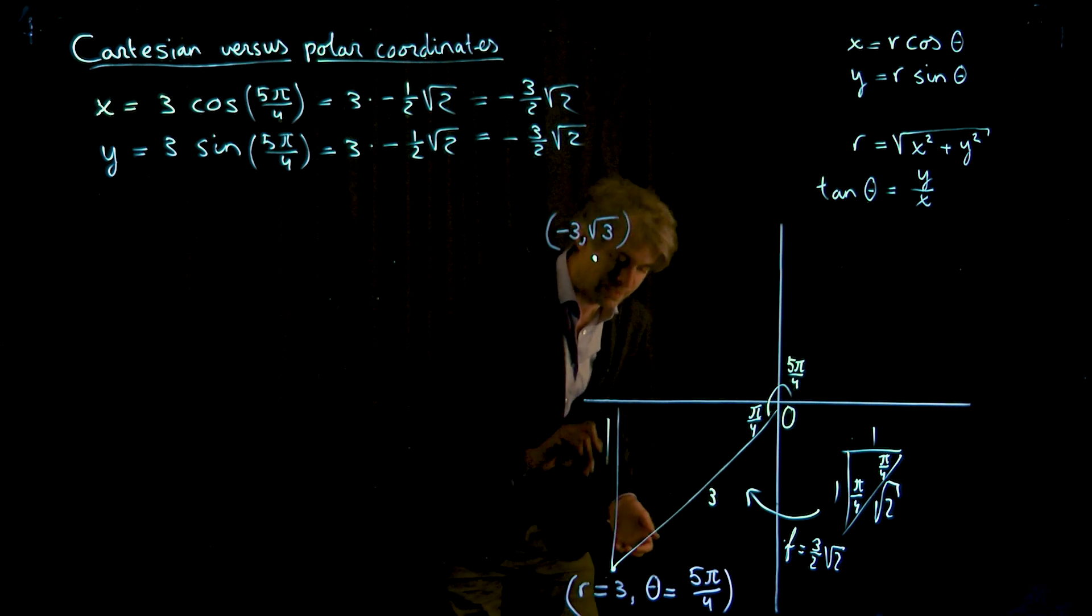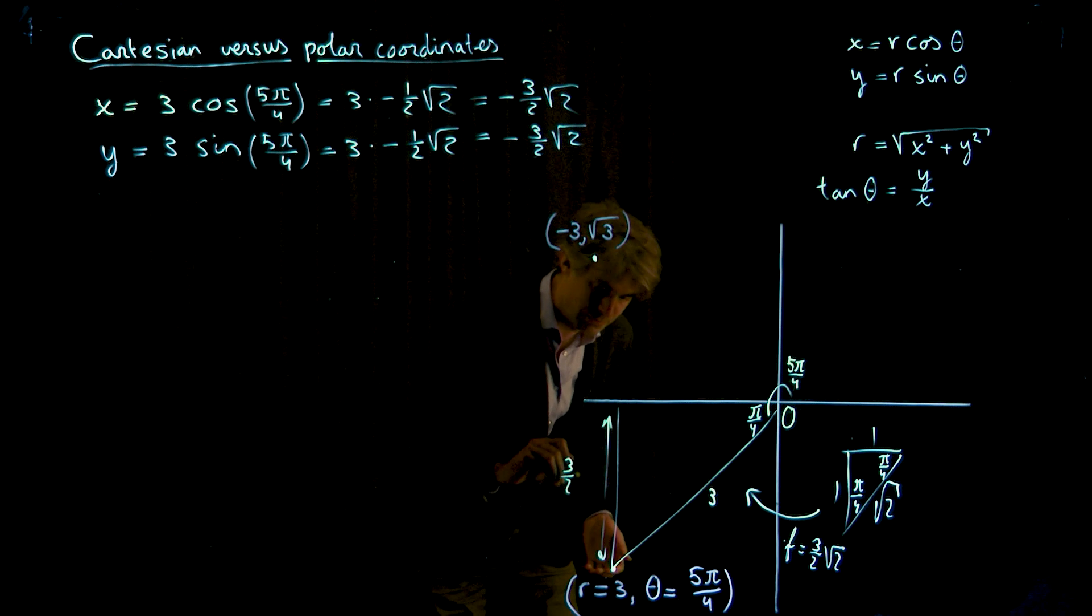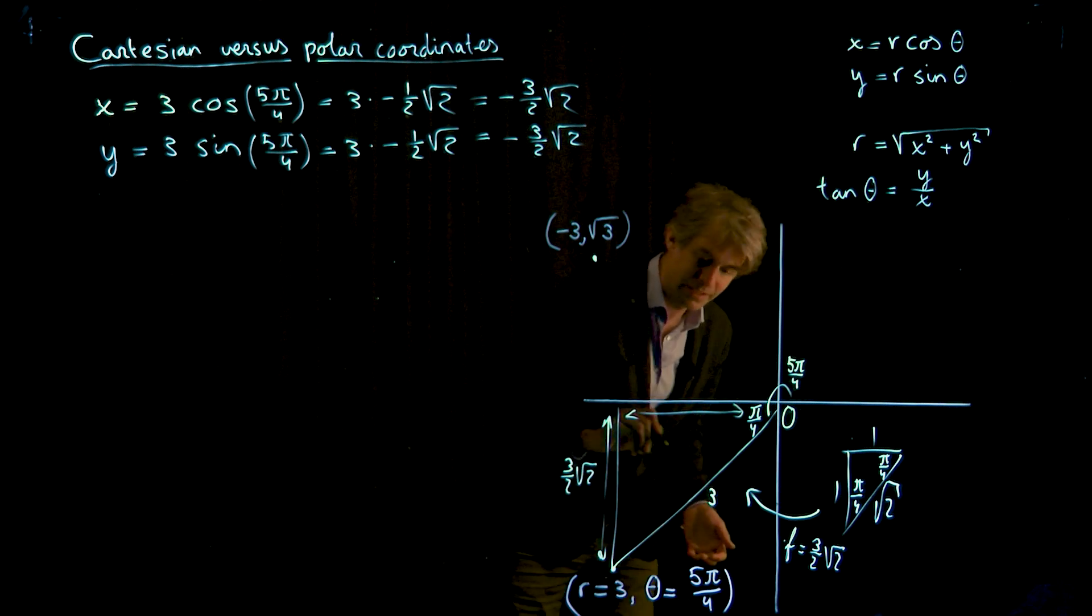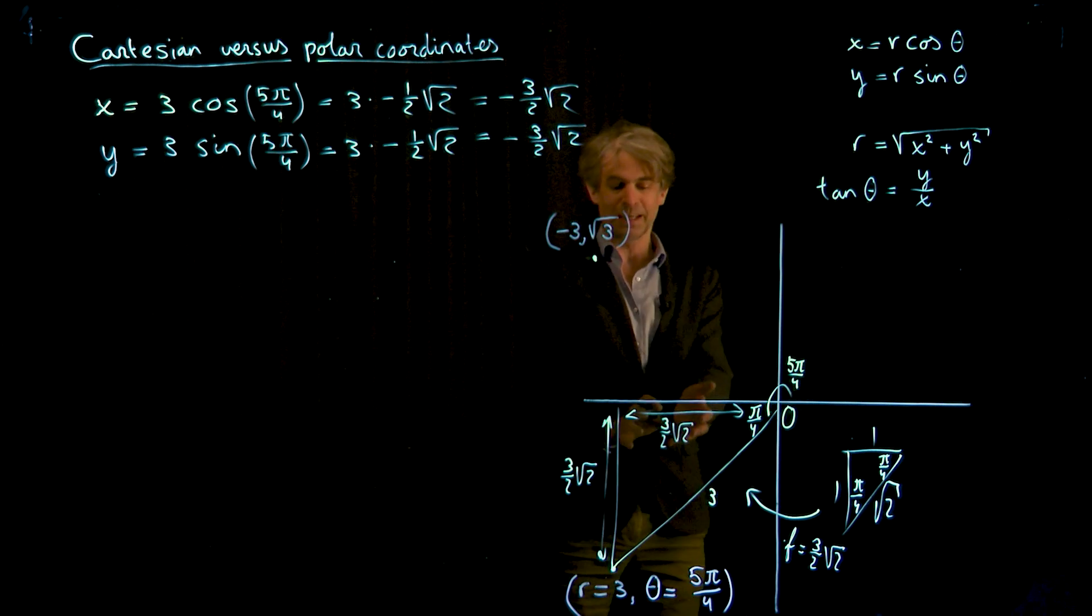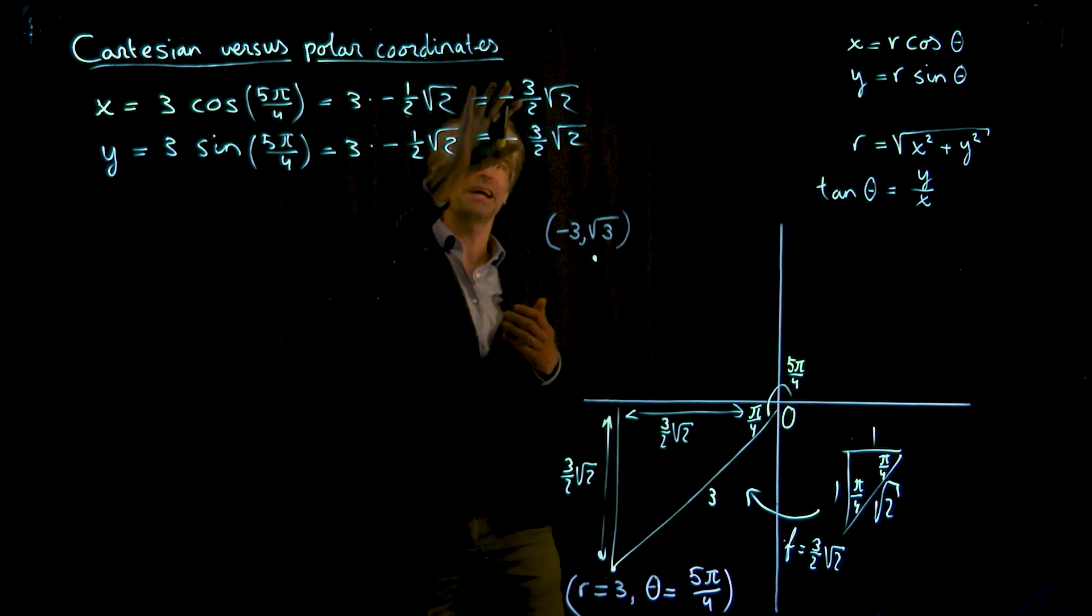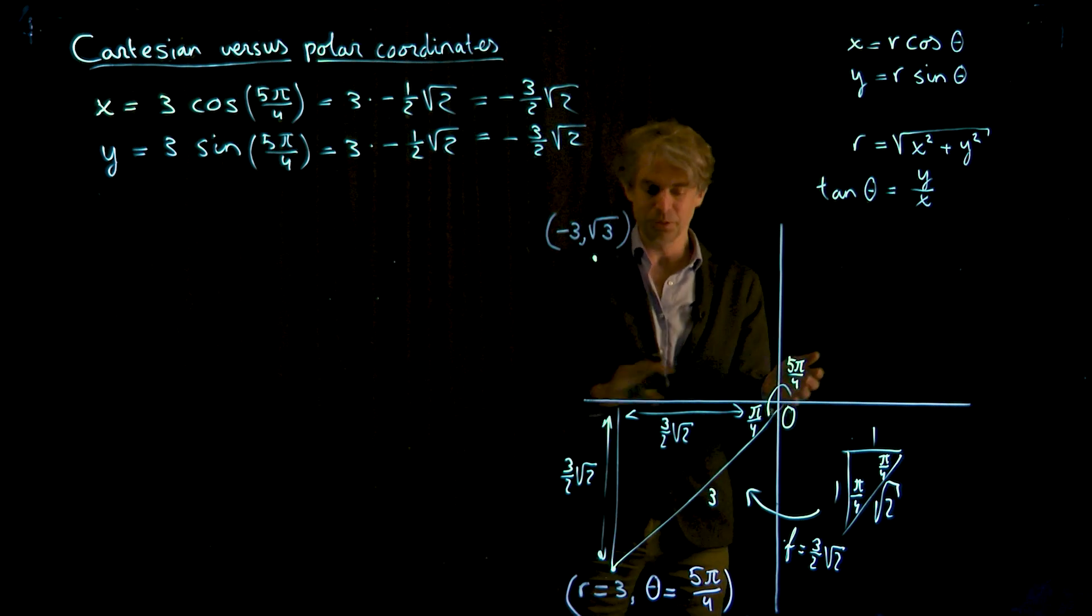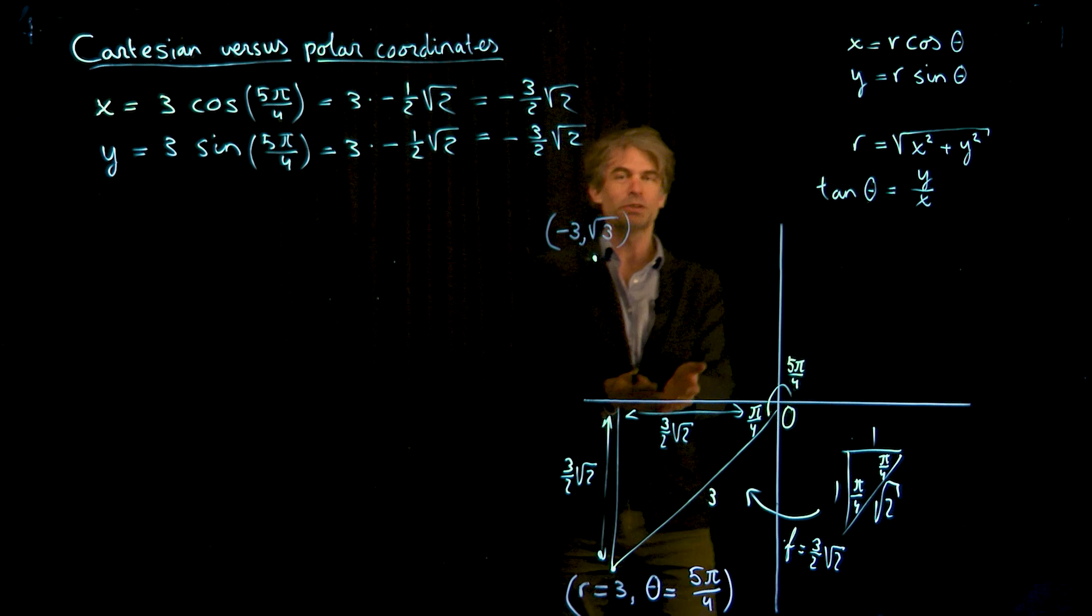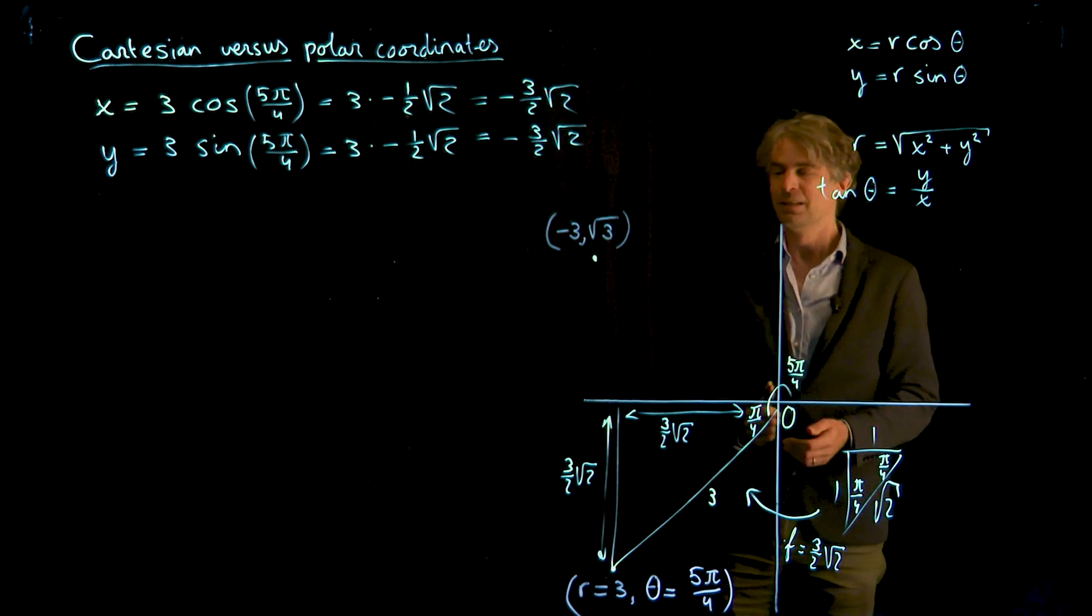Actually, the length here is 3 over 2 square root of 2, and the length here is 3 over 2 square root of 2. The only thing I need to do to get the right Cartesian coordinates is take care of the signs. Of course, we're in the third quadrant, and all signs need to be negative. That's a more geometric way to solve the problem, simply using these well-known triangles.